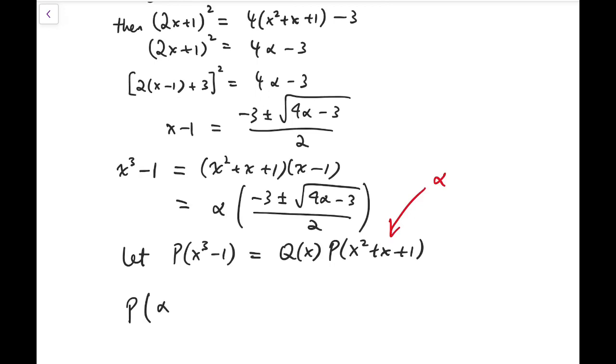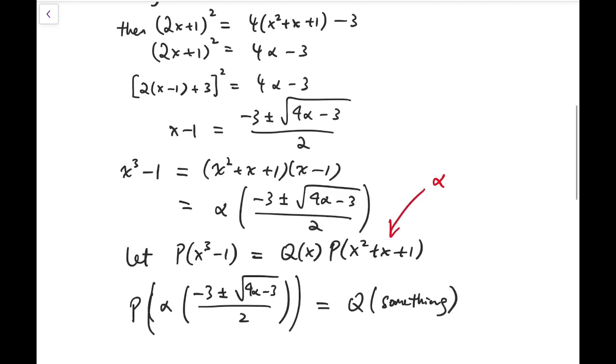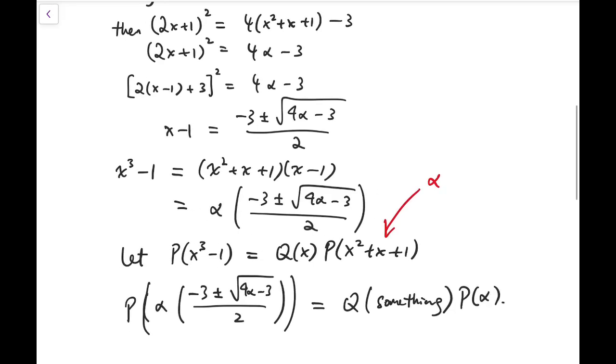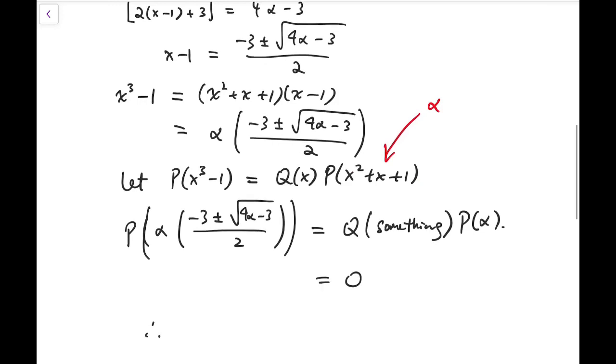So, P(α) equals 0, and that means P(α) times (-3±√(4α-3))/2 would equal Q(something), which I do not want to calculate anymore, too tedious and unrelated. So, we have generated, and this multiplied by P(α), which is 0. So, we have generated two roots from the root α that we have randomly picked.